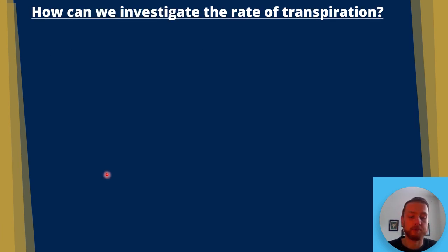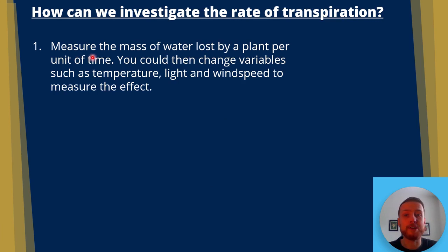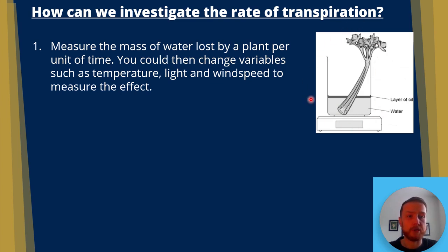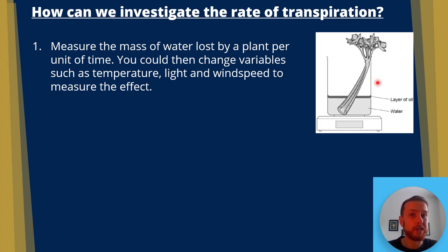How can we investigate the rate of transpiration? First, we can measure the mass of water lost by a plant per unit of time and change variables such as temperature, light, or wind speed. Using a mass potometer with a piece of plant tissue — in this case celery — water is drawn up through the xylem and leaves through the stomata. We could compare complete darkness versus a lamp, add a fan at different distances to measure wind speed, or test different temperatures.